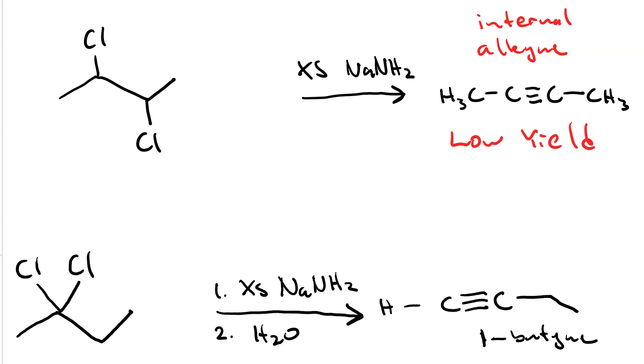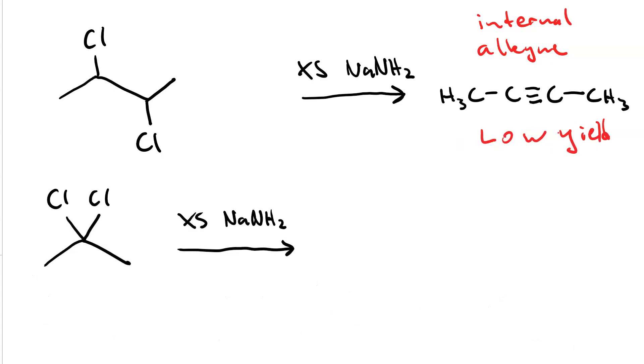There is however a two-step process for getting it in high yield. If we first react our geminal dichloride 2,2-dichloropropane with excess sodium amide, we end up with the propynide ion.